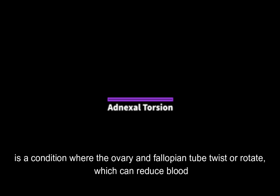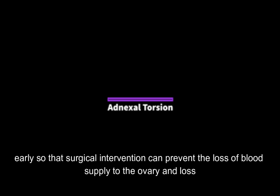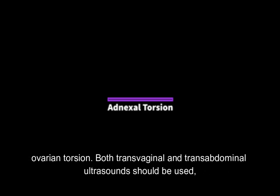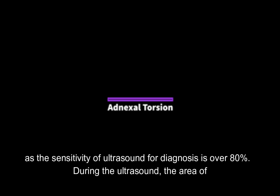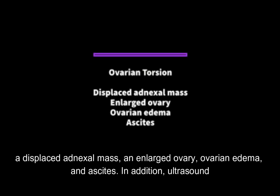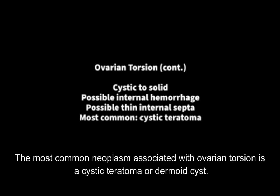Ovarian torsion is a condition where the ovary and fallopian tube twist or rotate, which can reduce blood flow to the ovary and cause acute pelvic pain. Early diagnosis is important so that surgical intervention can prevent loss of blood supply and ovarian function. Ultrasound and color Doppler are the primary imaging methods, with sensitivity over 80%. Common ultrasound findings include a displaced adnexal mass, enlarged ovary, ovarian edema, and ascites. Ultrasound may also show a cystic to solid mass with possible internal hemorrhage and thin internal septa. The most common neoplasm associated with ovarian torsion is a cystic teratoma or dermoid cyst.